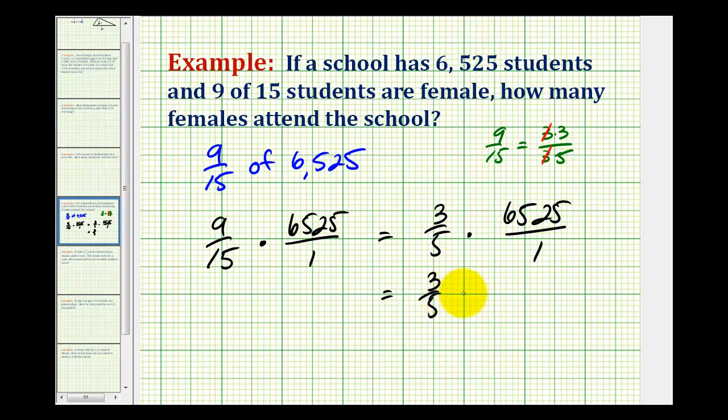3/5 times, now you can check me on this, but 6,525 is equal to 5 times 1,305. So now we can see this factor of 5 here and here simplified to 1.